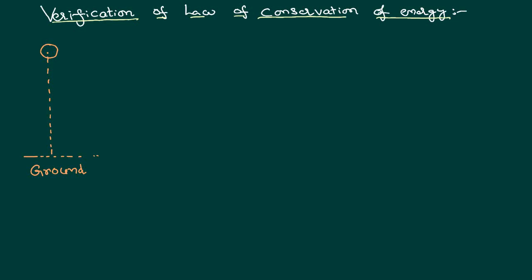Let us consider a body whose mass is equal to m, at a certain height from the ground. It has no initial velocity and is a freely falling body. We would like to verify the law of conservation of energy for a freely falling body. A freely falling body has initial velocity equal to zero and is dropped from a certain height vertically downwards.